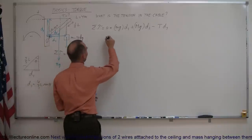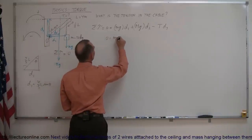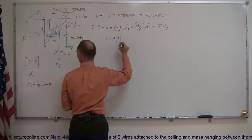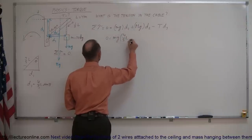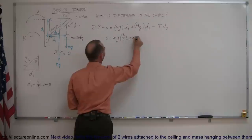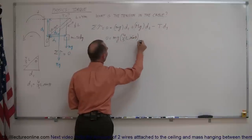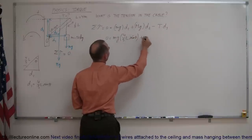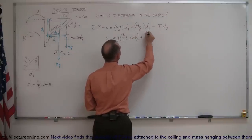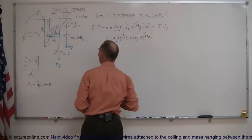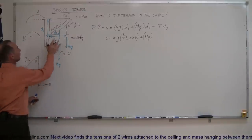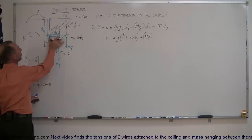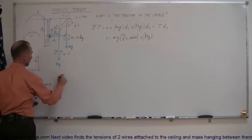So we have: zero equals mg times d1, which is four-fifths the length of the beam times the sine of angle theta. Plus big Mg times d2. Now, what is d2 equal to? d2 is this side of this little triangle right here.